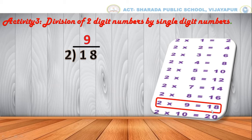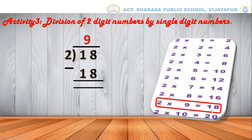Write 9 in the quotient and 18 in the line below. Now we should subtract. 8 minus 8 we will get 0, and 1 minus 1 we will get 0.